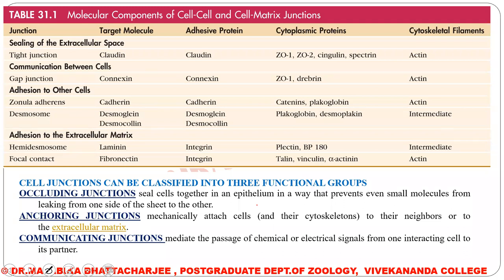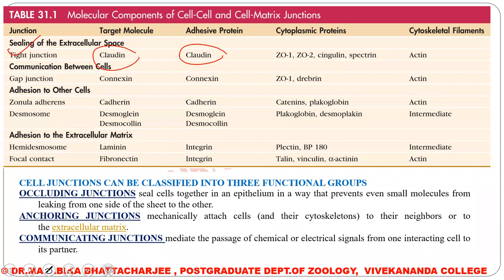Now coming to the molecular components of cell-cell junctions, we are not going to go into much detail about this particular table. For tight junctions, we will be studying two categories of proteins: claudin and occludin. We will also be studying gap junctions, specifically the adhesive protein connexin. Under adherence junctions and desmosomes, we will study desmoglein, desmocollin, plakoglobin, and desmoplakin.